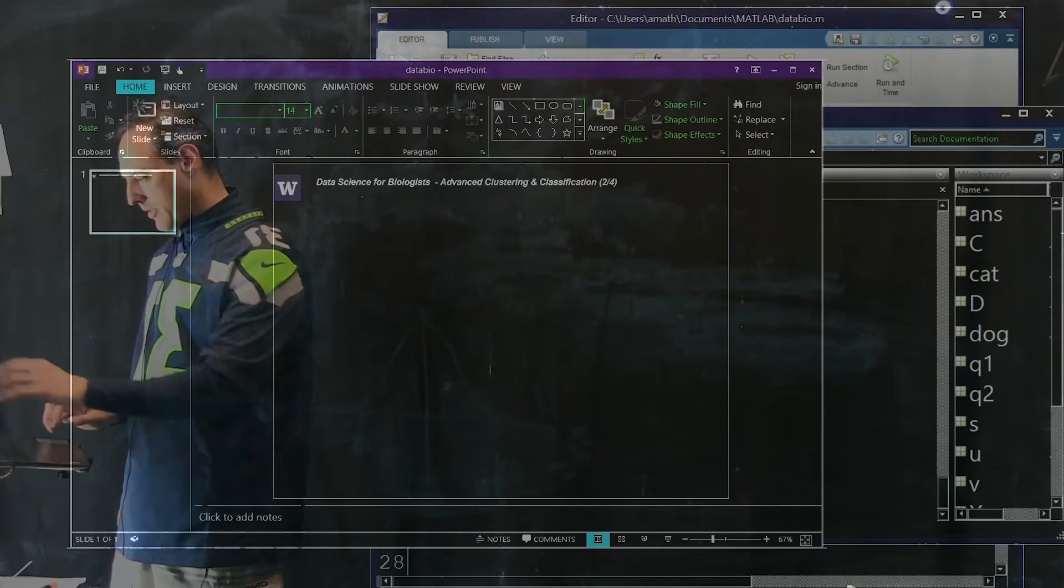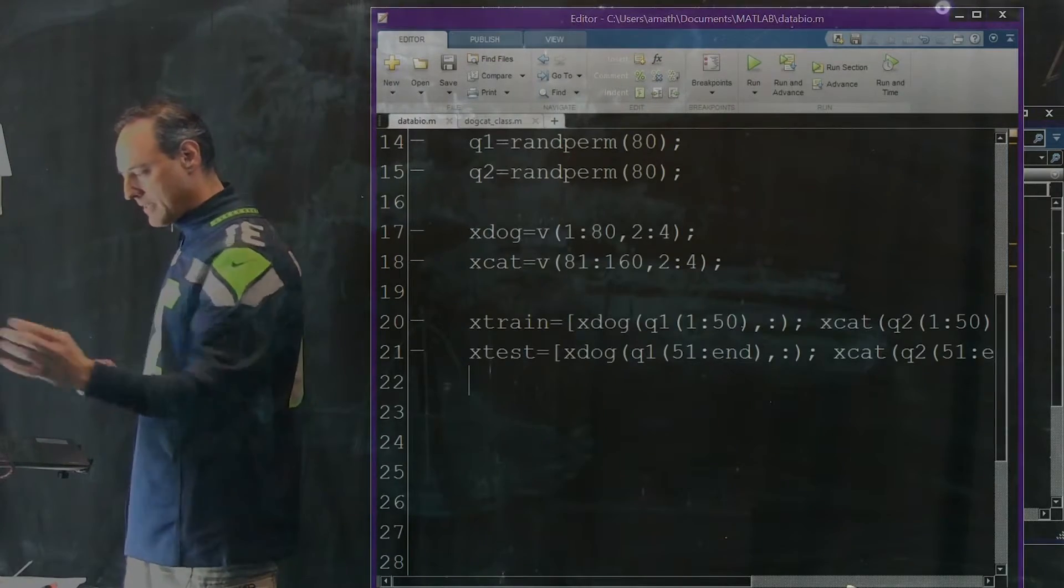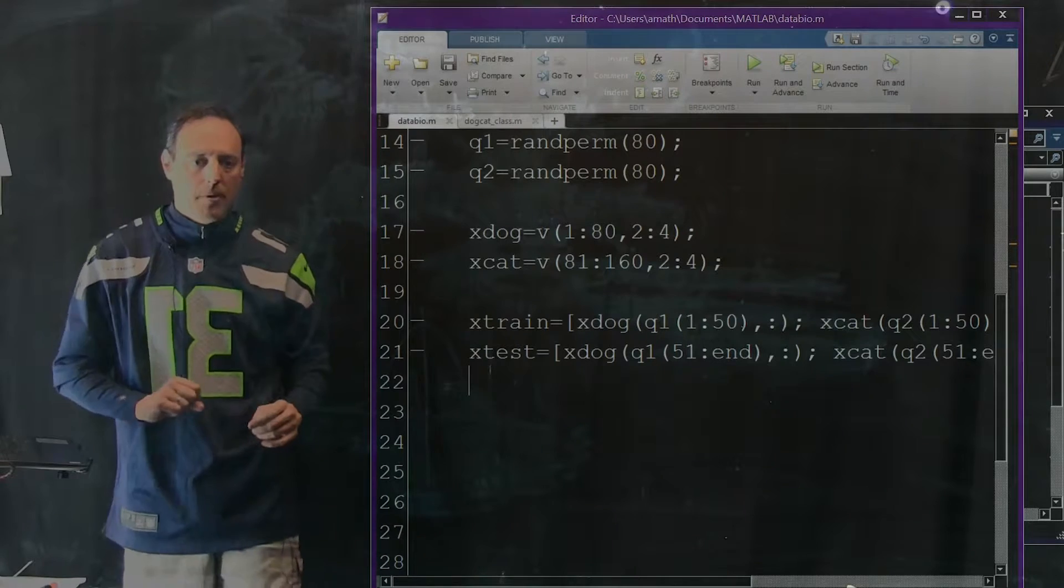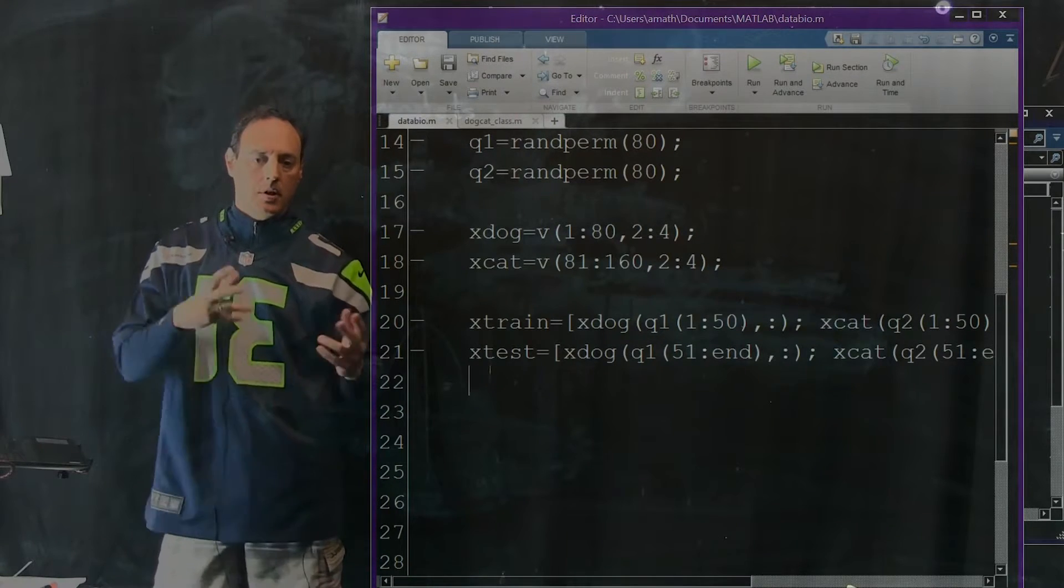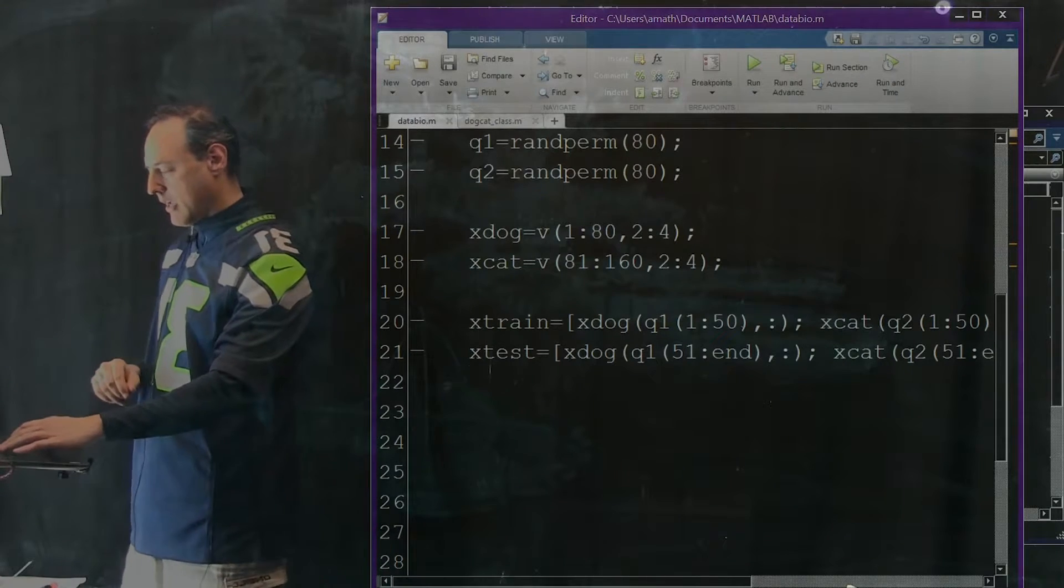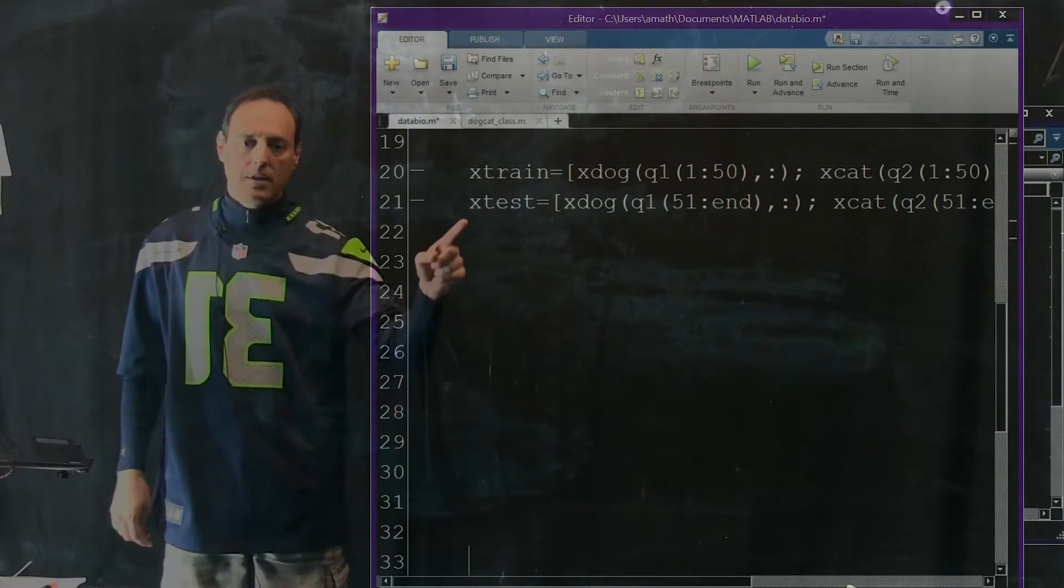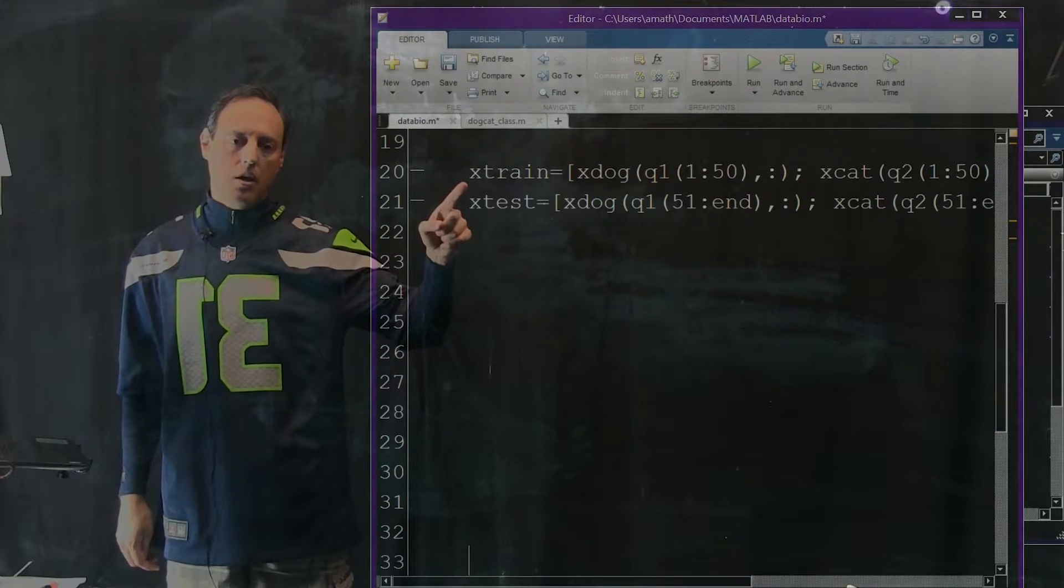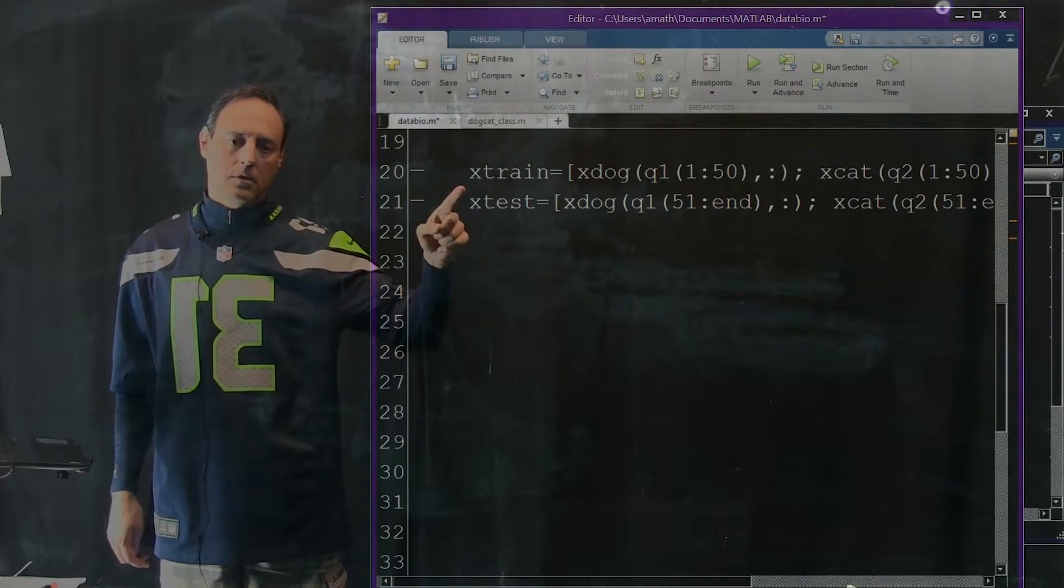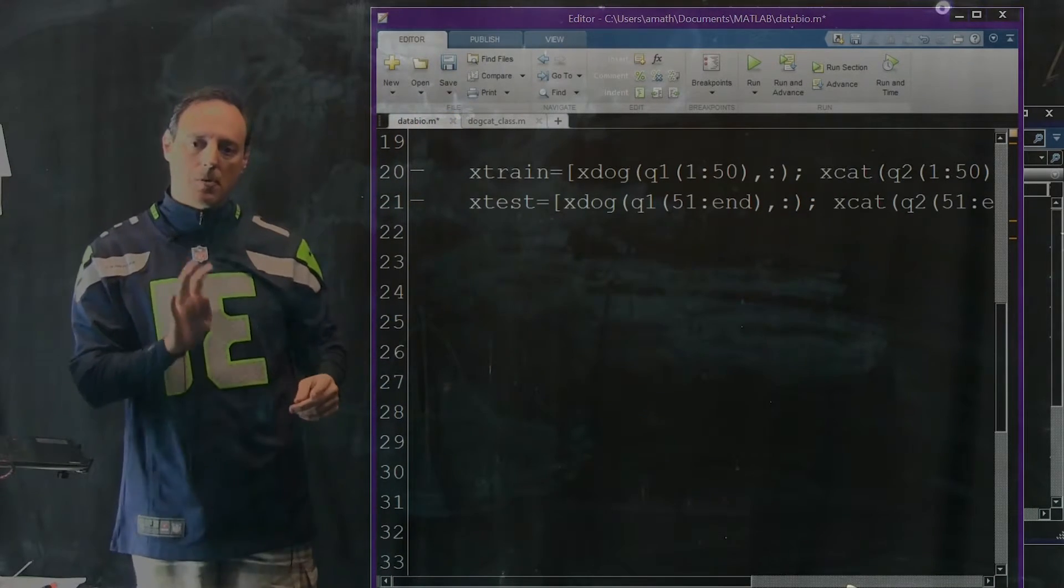And so that is, in itself, a very interesting topic of research that people think about. But for right now, we're going to say, for the cat and dog problem, I'm going to pick two clusters. I'm going to use this Gaussian mixture model to try to do the classification and regression. So, let's go to this. We have our MATLAB open. And in fact, more than that, if you remember where we left off, here we are. We have our training set. We have our test set. And just a refresher. Remember, our training set is a random draw of 50 dogs stacked on top of 50 cats in the first three principal components.